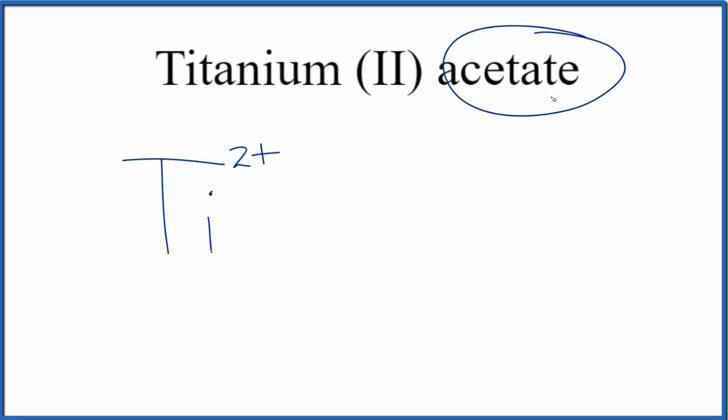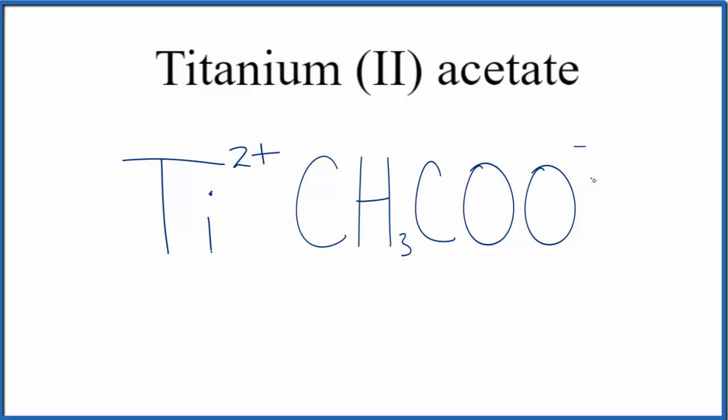Acetate here, you won't find acetate on the periodic table. This A-T-E here, that tells you it's a polyatomic ion. If you're allowed, you can look it up or you can just memorize that the acetate ion is CH3COO- and this minus is on the whole acetate ion here.